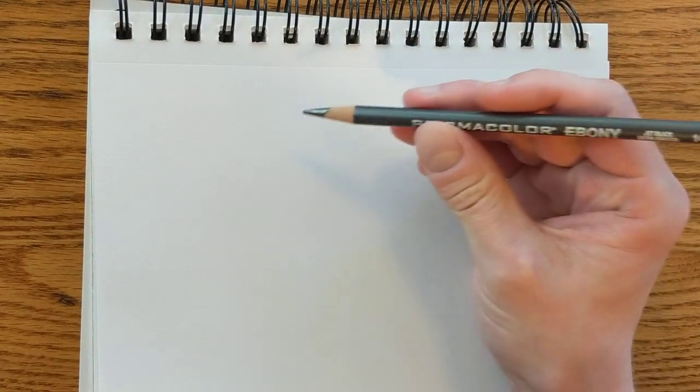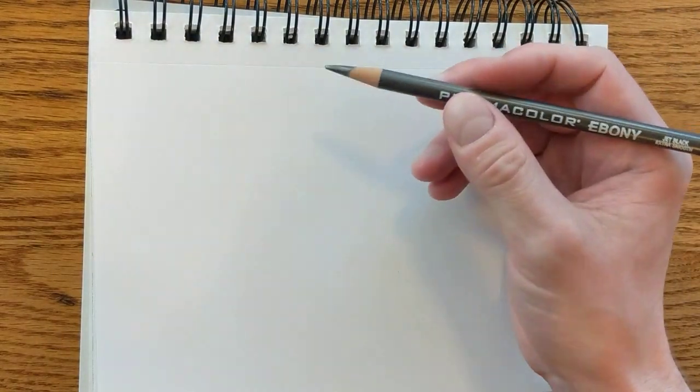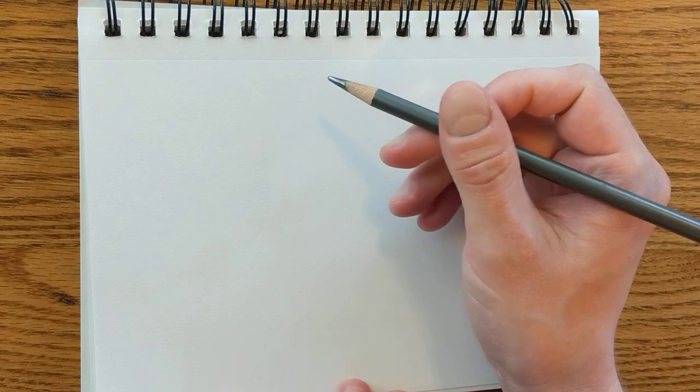I'm going to try zooming in my camera so you can see my actual sketchbook a little bit better. There we go, okay. So I'm just going to draw with a simple Prismacolor ebony pencil. I'm not going to worry about getting everything perfect. I'm not even going to worry about erasing.